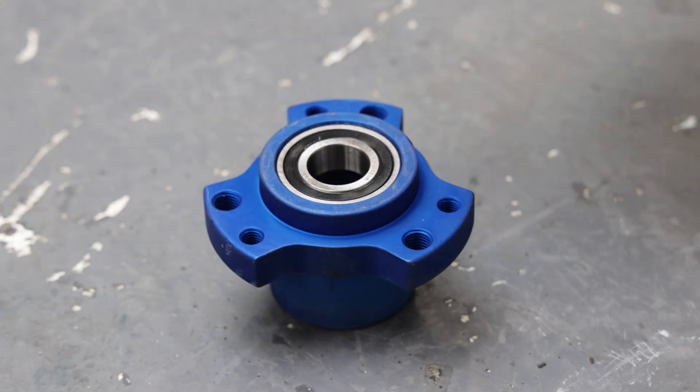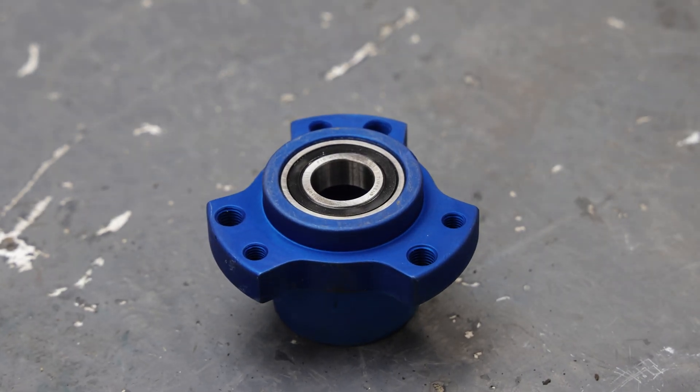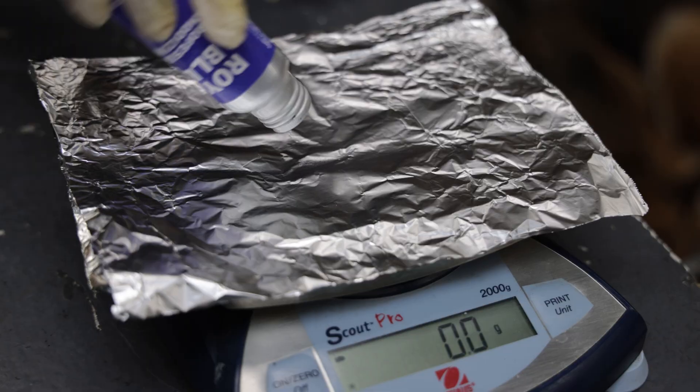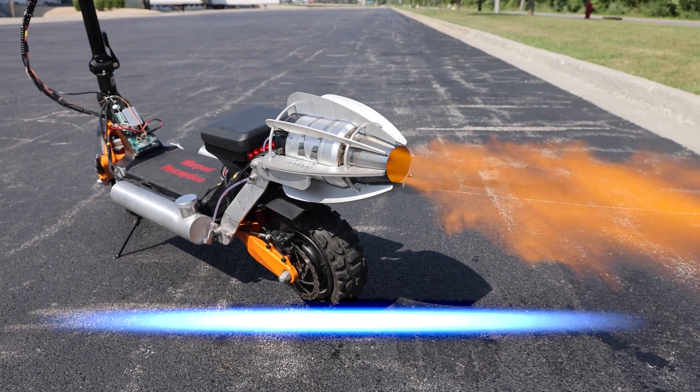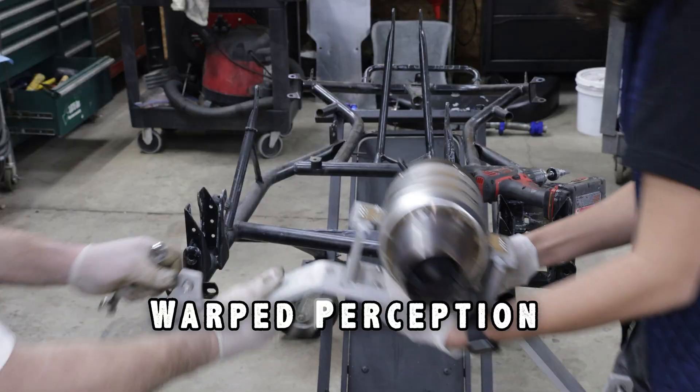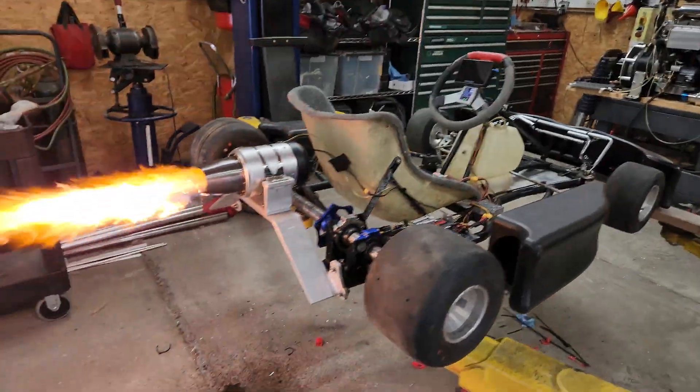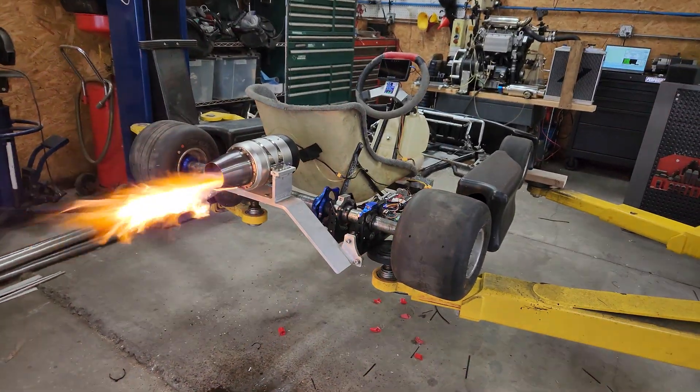The part came out great. If you try this make sure you wear all of your protective equipment including goggles and gloves. Be careful. Make sure you check out my main channel Warped Perception which is where this excerpt is from. This is from the new jet go-kart build. Thanks for watching. See you in the next video.